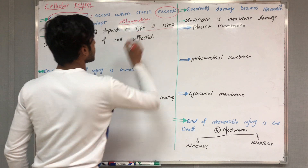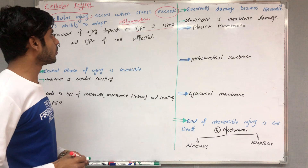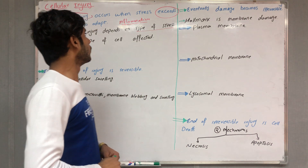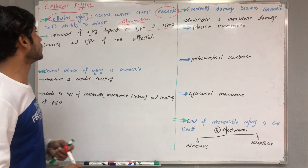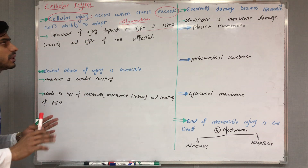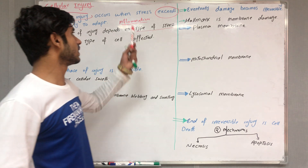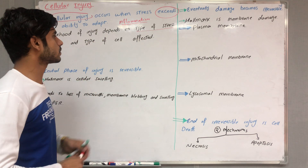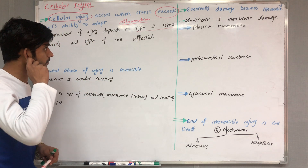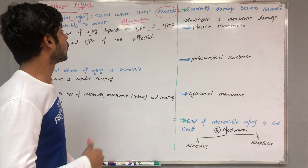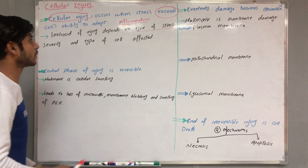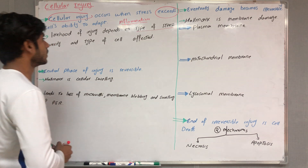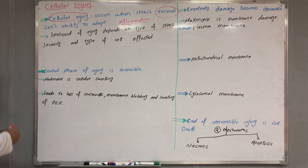Inflammation is a kind of stress, but in most cases inflammation moves the organ towards adaptations, so it doesn't cause the exceed limit. In the case of inflammation, the cell will undergo adaptations, not cellular injury.